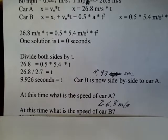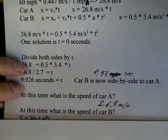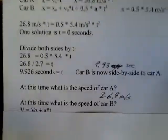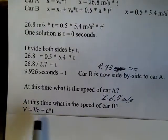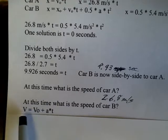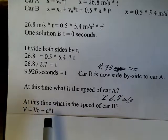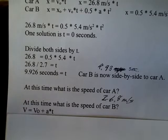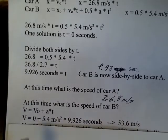More interesting, what's the speed of car B? It's been accelerating, started at zero meters per second. It's been accelerating at 5.4 meters per second squared for 9.926 seconds. To find its velocity, we use the first kinematic equation. The final velocity is the initial velocity plus the acceleration times time. Again, acceleration must be constant to use this equation. We start at zero meters per second. We have an acceleration value. We have the time. We multiply those two, and we get 53.6 meters per second.